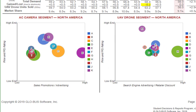Last but not least, we have the charts at the bottom. For the AC camera segment, team E is leading in sales promotion and advertising, and the PQ rating is a little bit higher than A. For the drone segment, team H is the highest in search engine advertising, while team K is the highest in price and PQ rating. Take in all this data and try to see if you need to make changes or not.